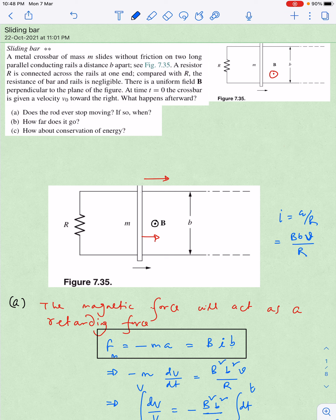Okay fine, so they are saying a metal crossbar of mass m slides without friction on two long parallel conducting rails at distance b apart. A resistor R is connected. They are saying that the resistance of the bar and the rails is negligible. At time t equal to zero, the crossbar is given a velocity v naught towards the right.